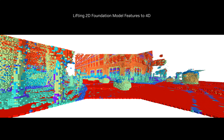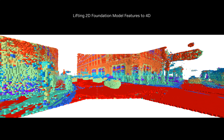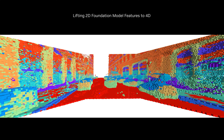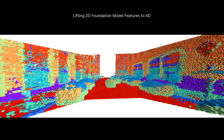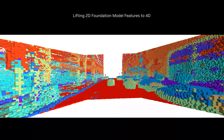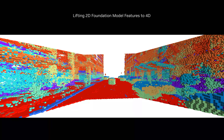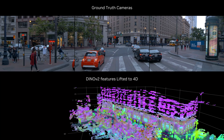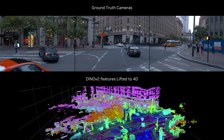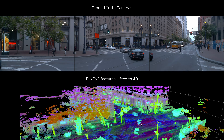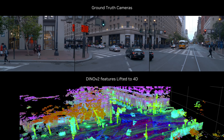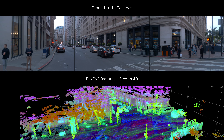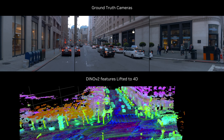EmerNeRF also provides semantic understanding for driving systems by lifting foundation model features from 2D space into its 4D space-time representation. Here, we lift features from DINOv2, a public model released by Meta, to see how EmerNeRF can segment objects into semantic types.